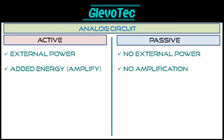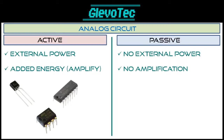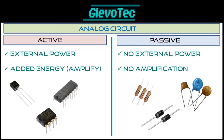In a way, we can say that active components change the signal with the capability of adding energy or amplifying. Passive components change the signal which results in lowering the energy of the signal. Examples of active components are transistors, operational amplifiers — also called op-amps — and other integrated devices. They all have amplifying characteristics. Examples of passive components are resistors, capacitors, diodes and so on. They have no amplifying characteristics.